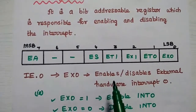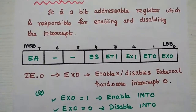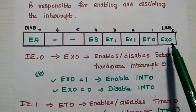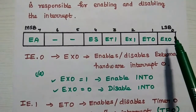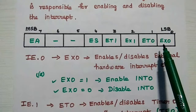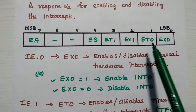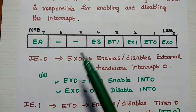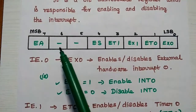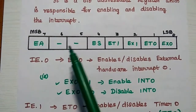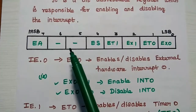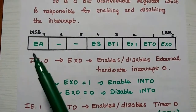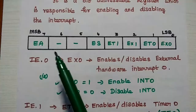Here is the bit representation of the IE register. Starting from the LSB, that is least significant bit 0, the bits are: EX0, ET0, EX1, ET1, ES. The fifth and sixth bits are reserved for future use, and the last MSB is EA.